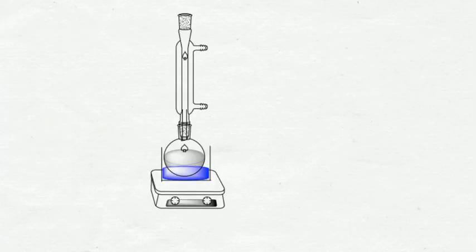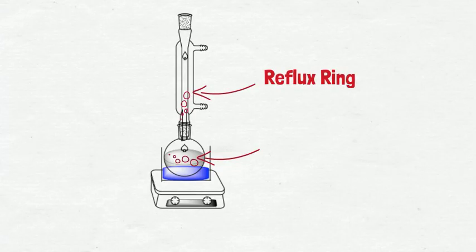It is important to remember that reflux starts when the reaction mixture is vigorously boiling and when you clearly see bubbles in the mixture. This is when you should start timing your reflux. You should also see droplets roughly one-third of the way up the condenser. This is called a reflux ring.